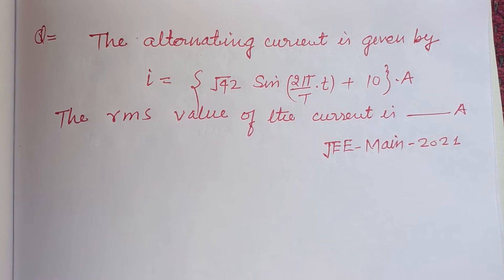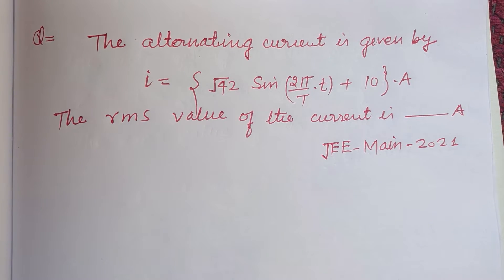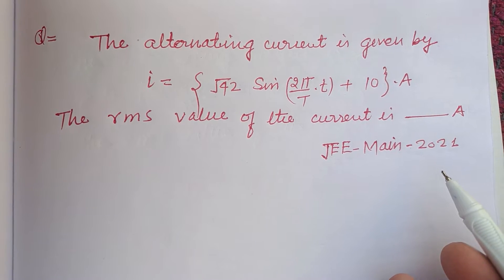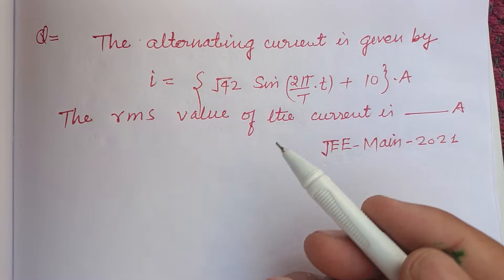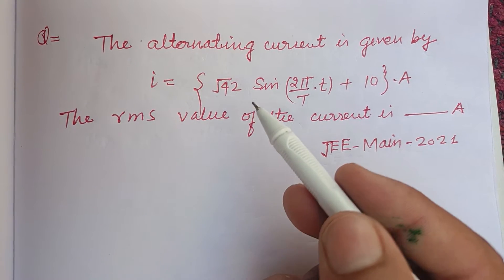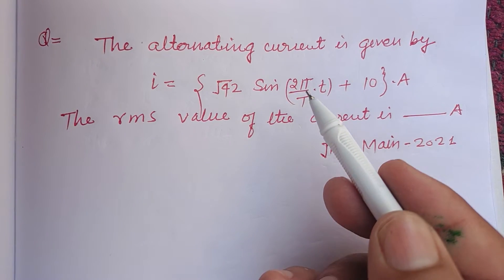Hello viewers, warm welcome to this YouTube channel. This is a question from JEE Main 2021. The alternating current is given by i = √42 sin 2π...